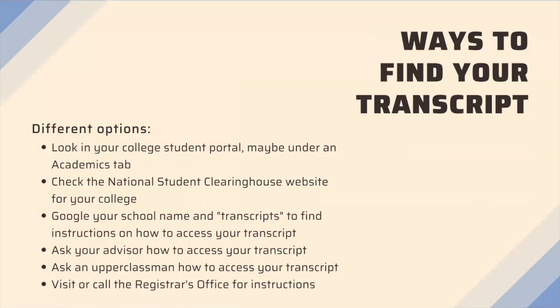So, ways to find your transcript. First, start by looking in your college student portal, probably in an academics tab or anywhere that you're able to view your grades. Check the National Student Clearinghouse website for your college — this is a big software platform that houses and sends transcripts for college students. Google your school name and the word 'transcripts' to find instructions on how to access your transcript. For example, you would type in 'K-State transcripts' and one of the results will probably be where you can find your transcript. Ask your advisor how to access it, or ask an upperclassman who has been there for some time.